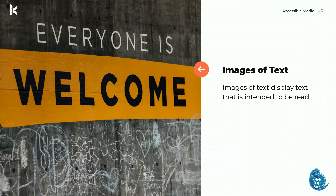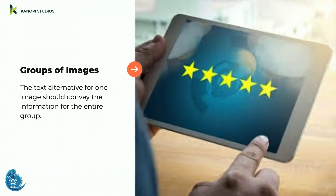Images of text are where text is presented within an image. If the image is not a logo, avoid doing this. But if you must include an image of text, make sure the text alternative contains the exact same language. Using text in images isn't always best practice because when people zoom in and out, the text can become blurry and distorted.